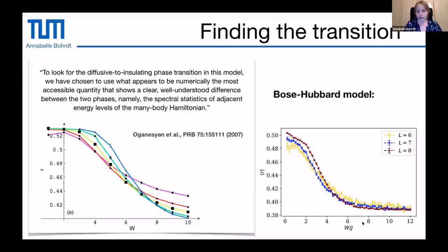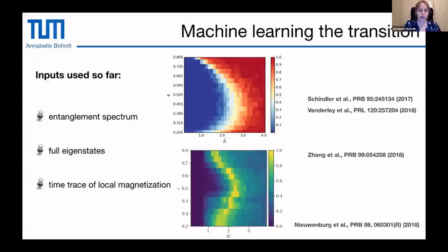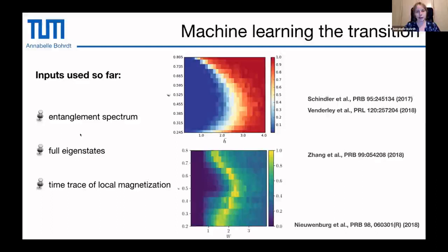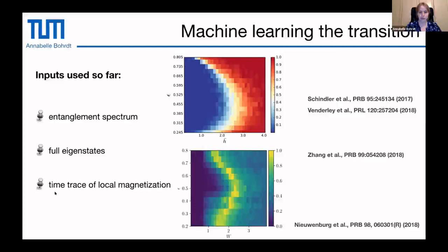Machine learning has been applied to find the MBL transition using different inputs. Two papers used the entanglement spectrum, obtaining a phase diagram as a function of disorder strength and energy density. Another work used full eigenstates of the Hamiltonian. Both of these are hard to obtain experimentally and for large systems. In another work, time traces of local magnetization were used as input for a spin system, where the full local magnetization dynamics were fed to the network.